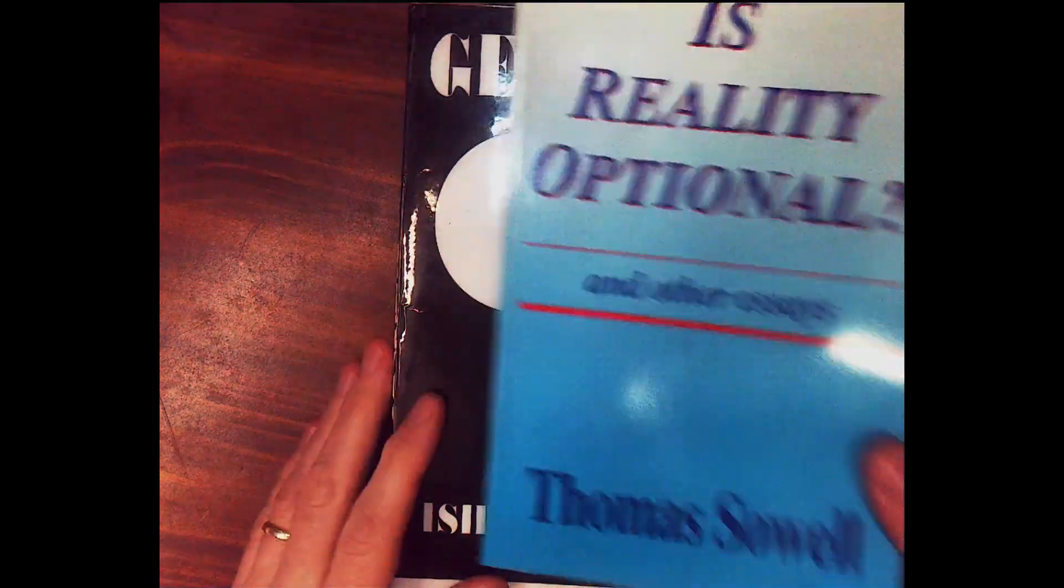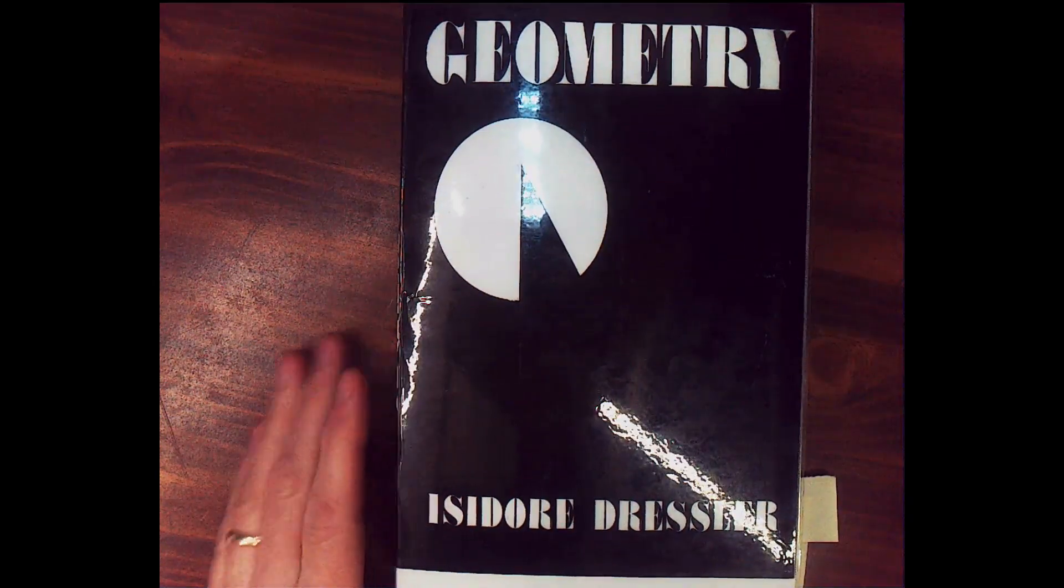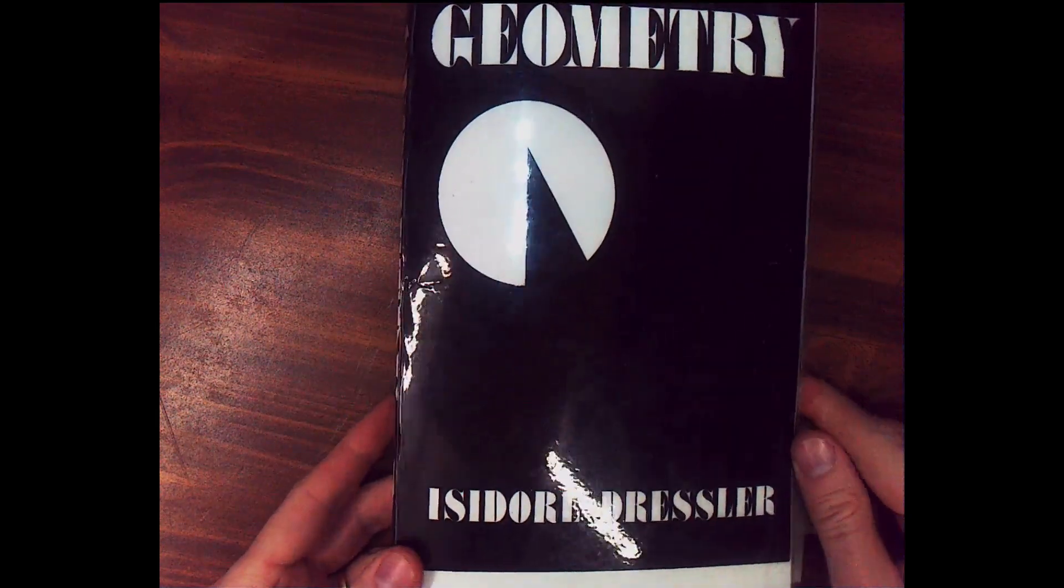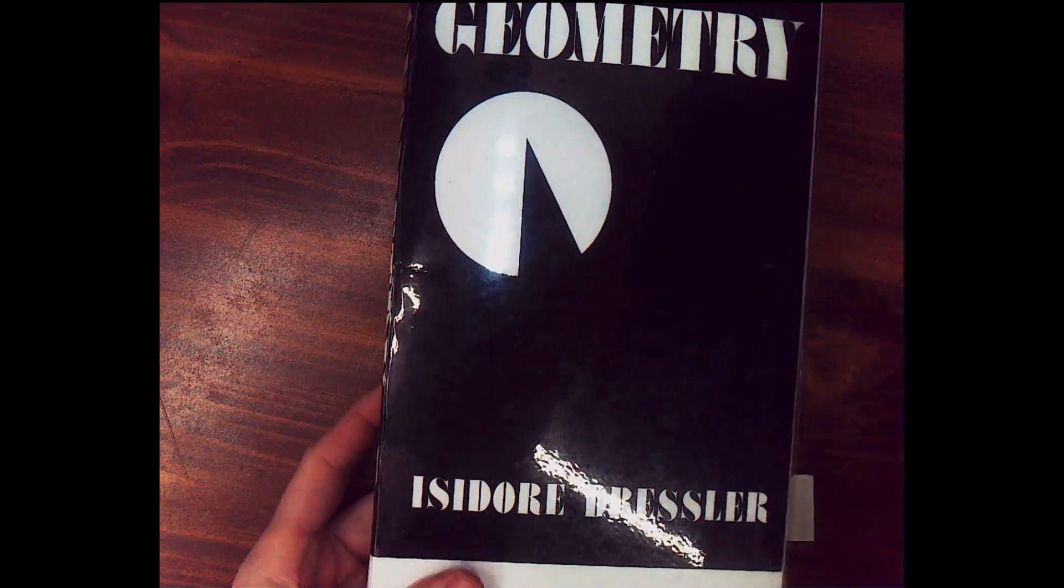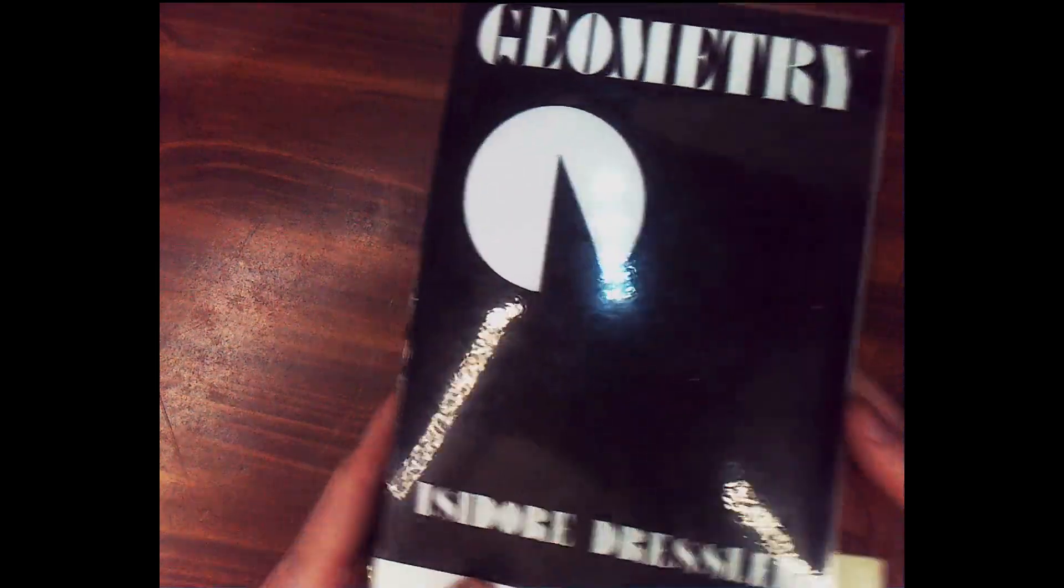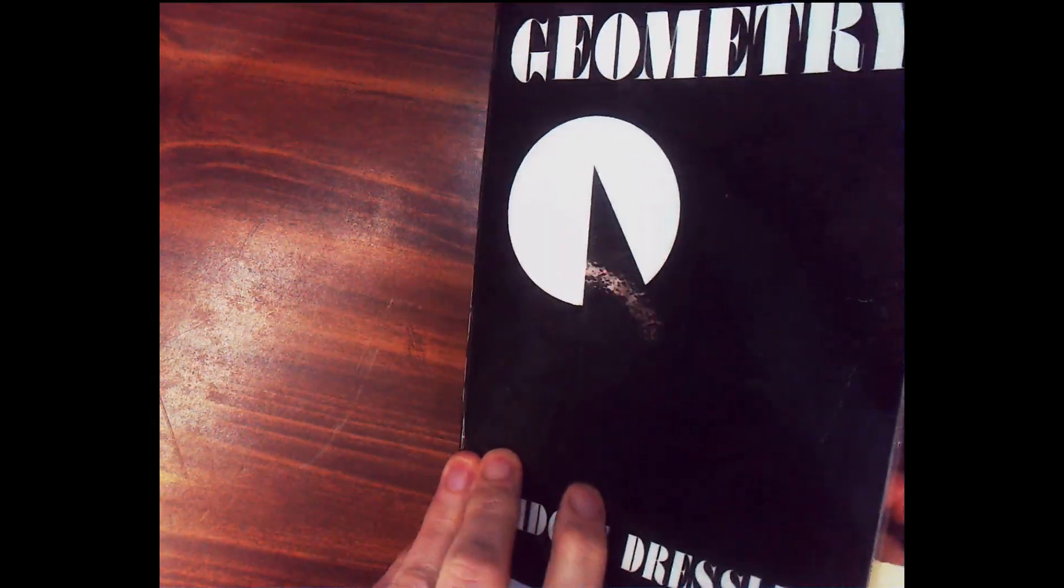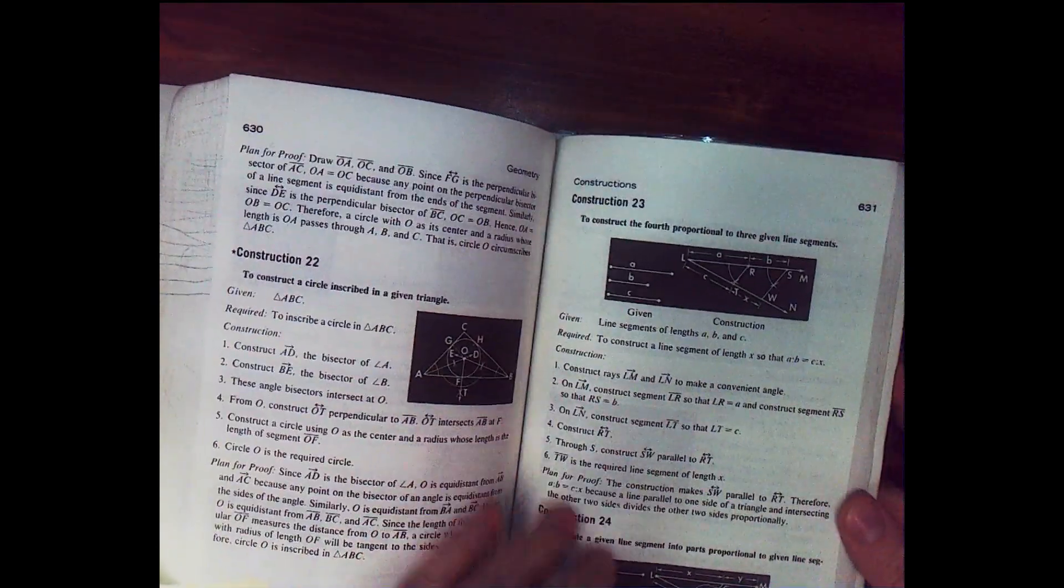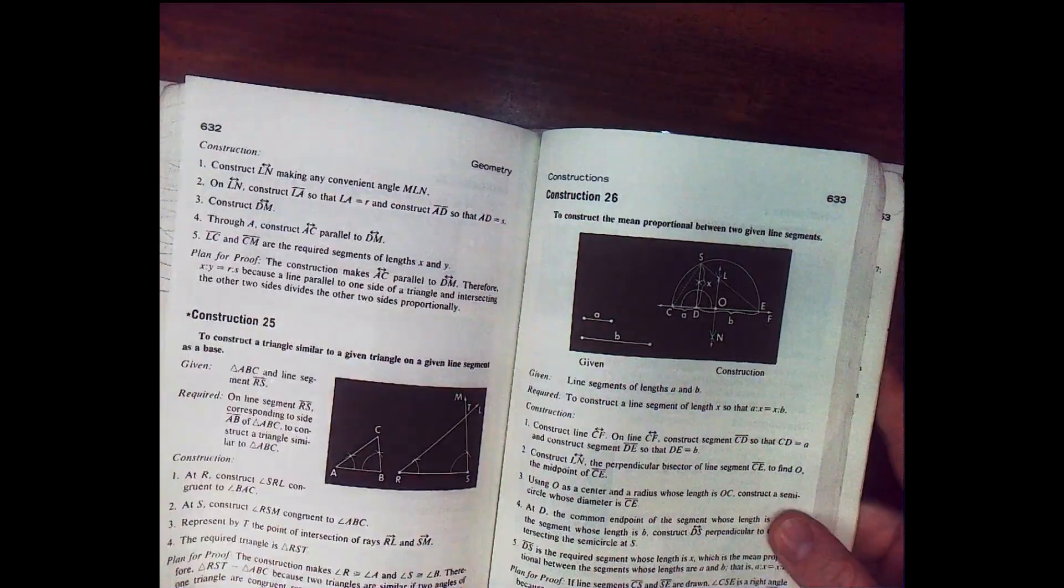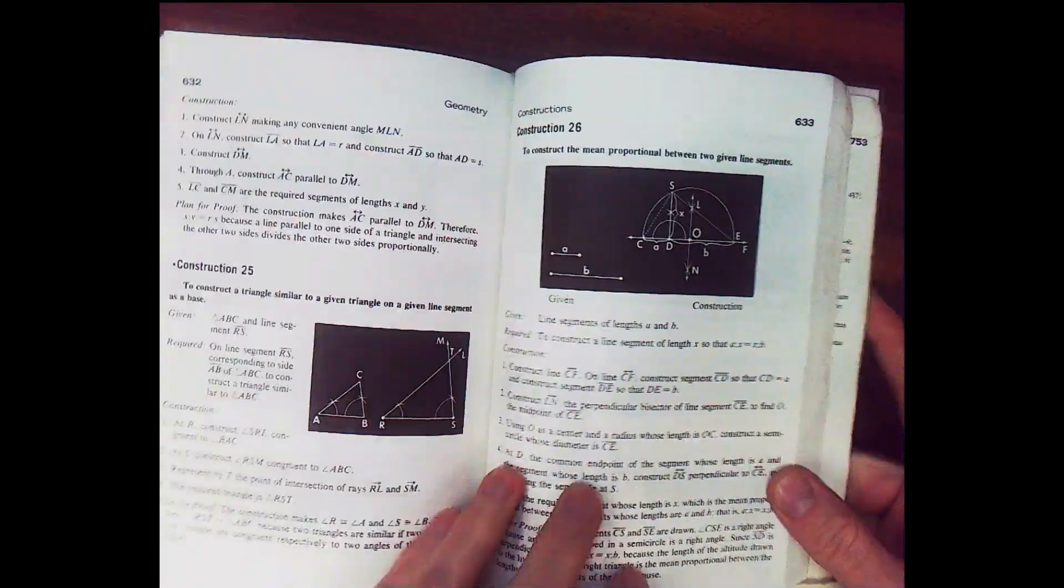So I want to finish up with one of my favorite geometry books by Isidore Dressler. I taught extensively out of this book as well. And this is a very old school textbook in that it's got constructions. So I actually had my students doing constructions with a straight edge and compass.